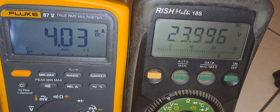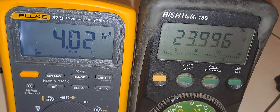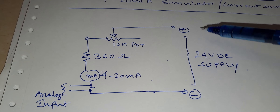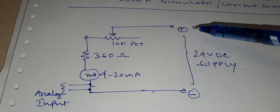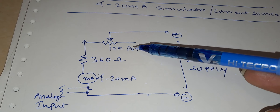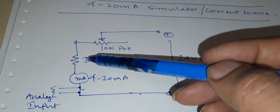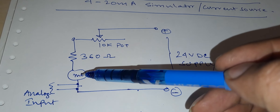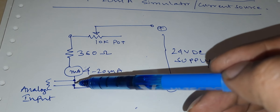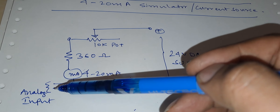This can be achieved with a very simple circuit. Here is the simple circuit diagram for a 4 to 20 mA simulator. This is a 24 volt DC supply, controlled by a 10 kilo ohm potentiometer. The open end of the potentiometer is connected with a 360 ohm resistor and a mA meter for display, and from there it is connected to the analog input card.